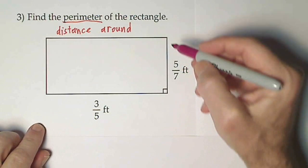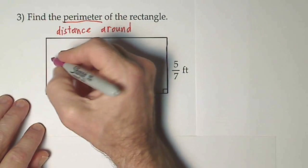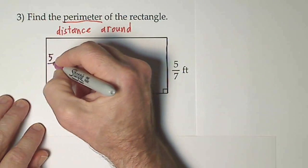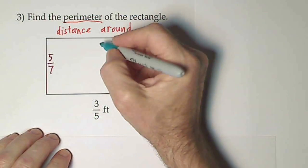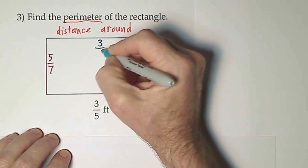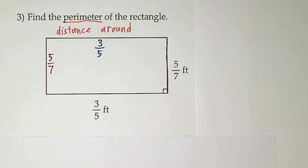You can trust that if this side is 5/7 of a foot, this side is 5/7 of a foot. And likewise, if the bottom is 3/5, the top is 3/5. To add up all four sides, we're going to have to end up with some common denominators.